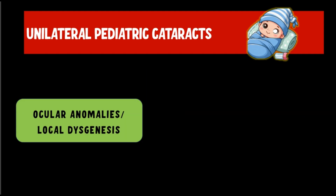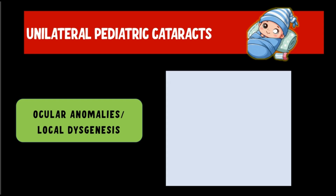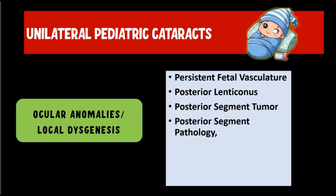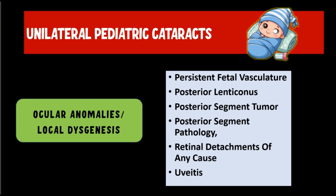Now let us discuss the ocular anomalies that can cause a unilateral pediatric cataract. These include persistent fetal vasculature, posterior lenticonus, posterior segment tumors, posterior segment pathologies, retinal detachments of any cause, and sometimes even uveitis.